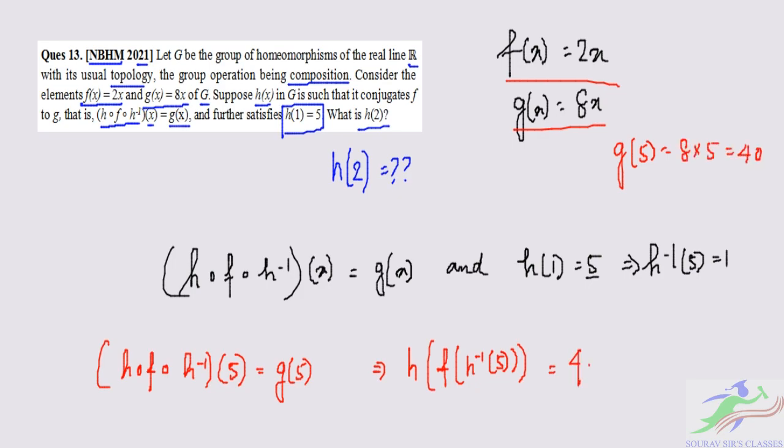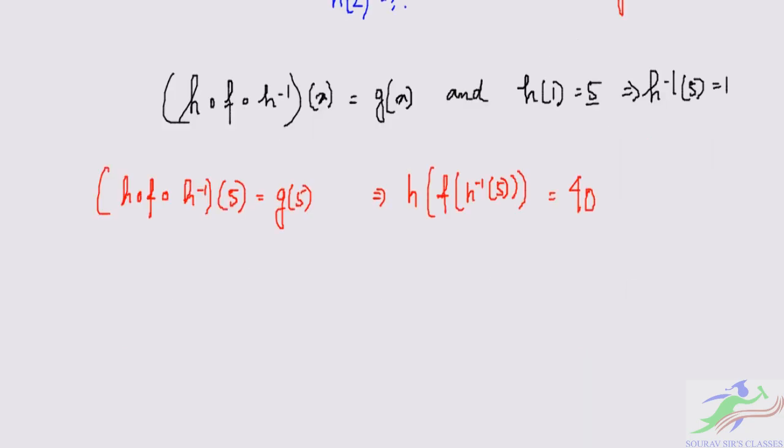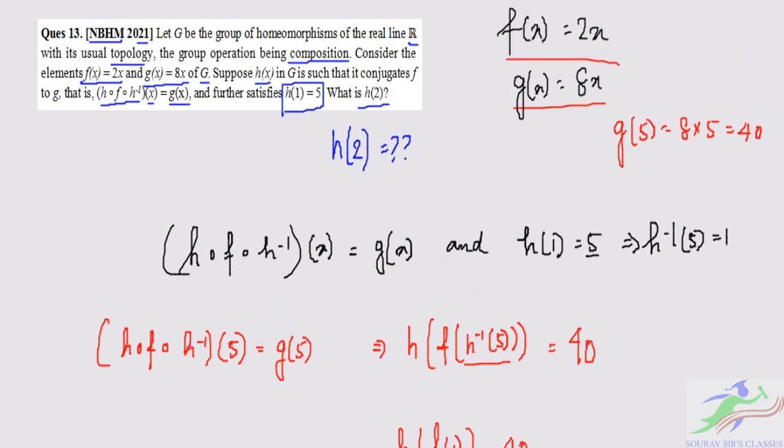So h⁻¹(5) is 1. So we can write h(f(1))=40. Now it is given that f(x)=2x, so f(1) is 2×1 that is 2.